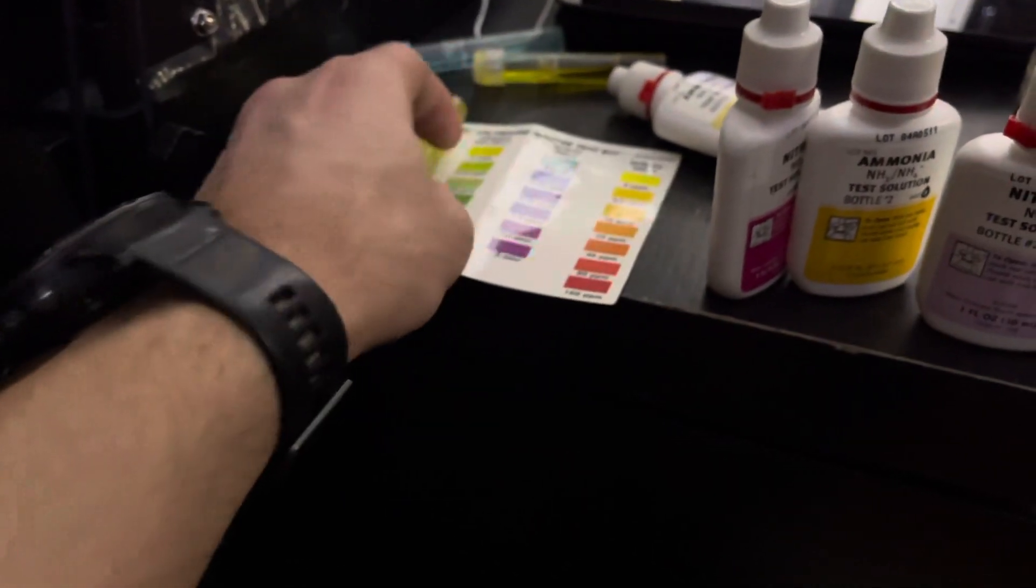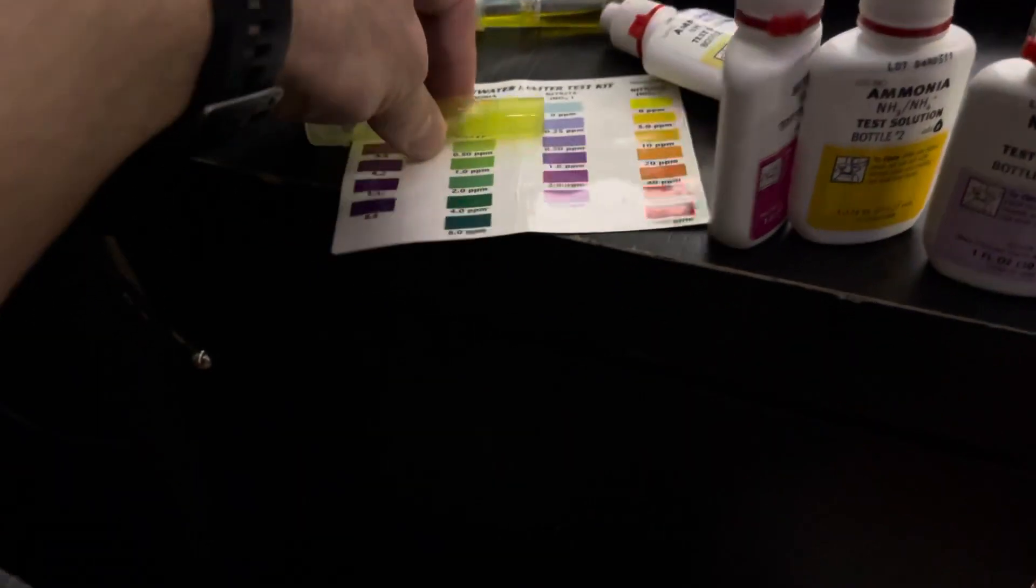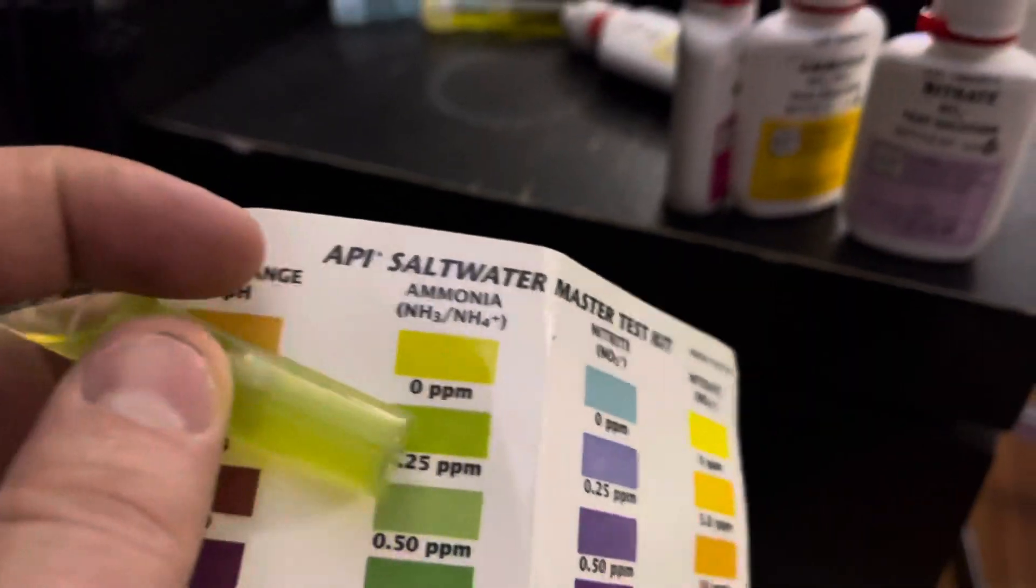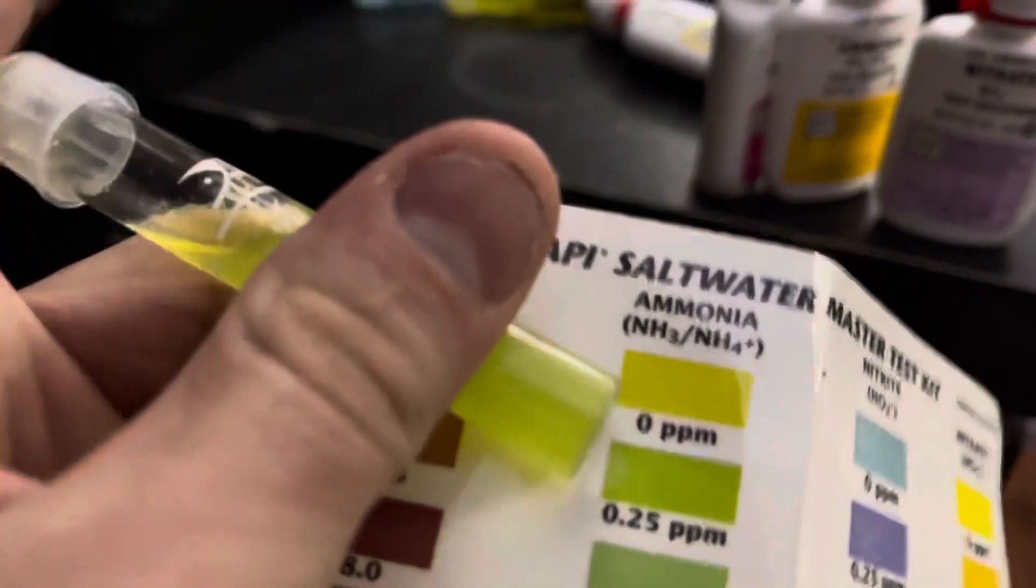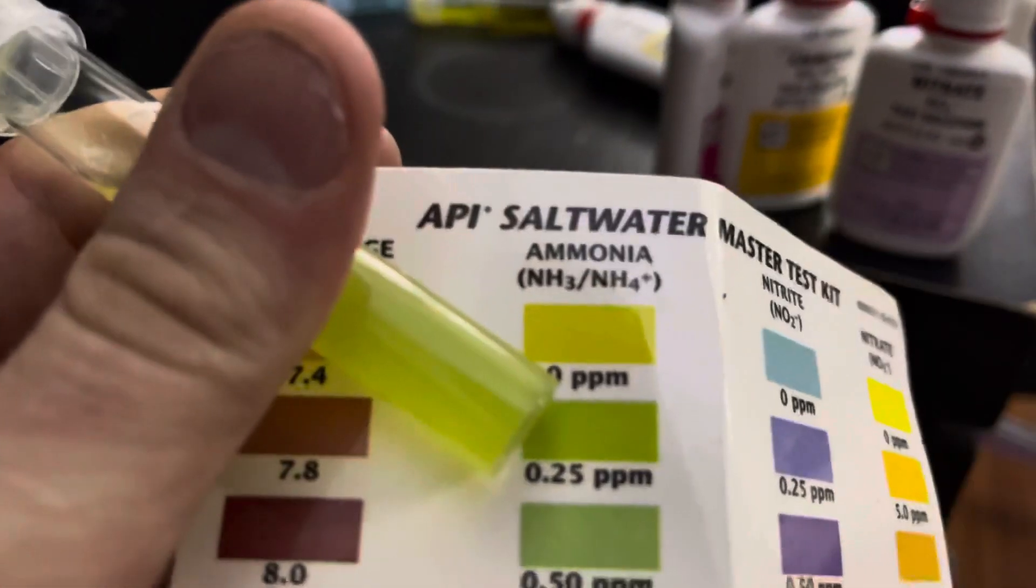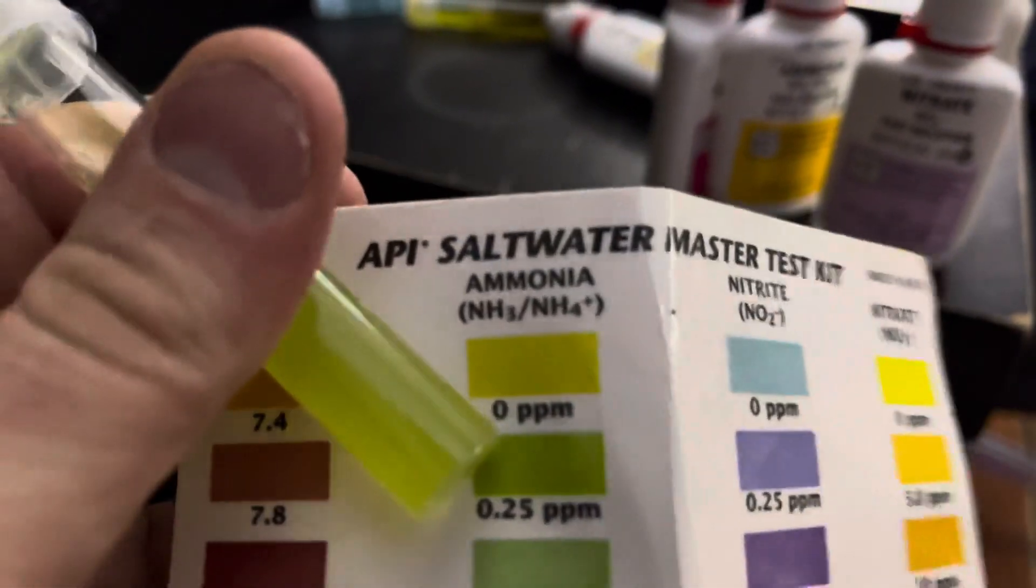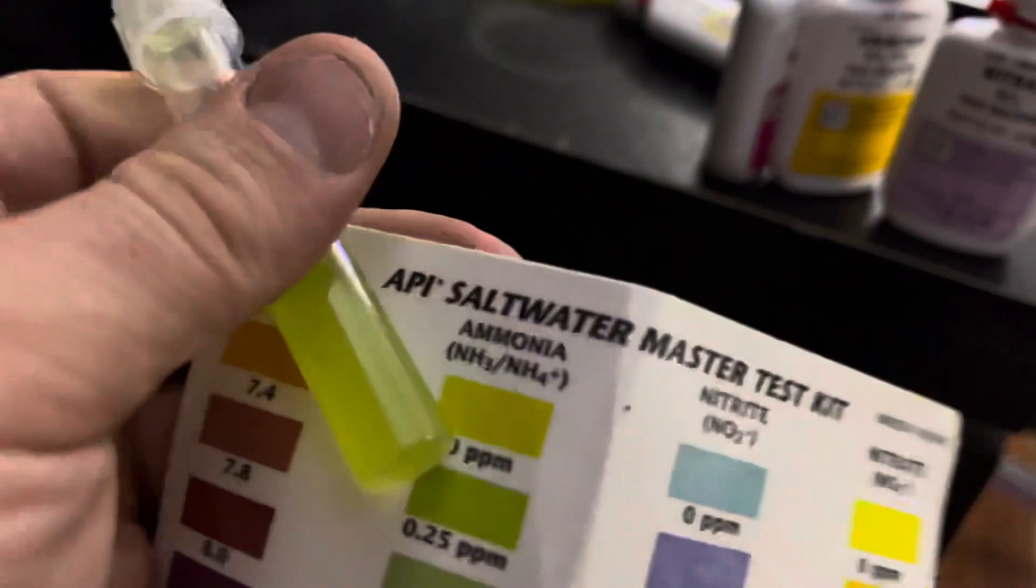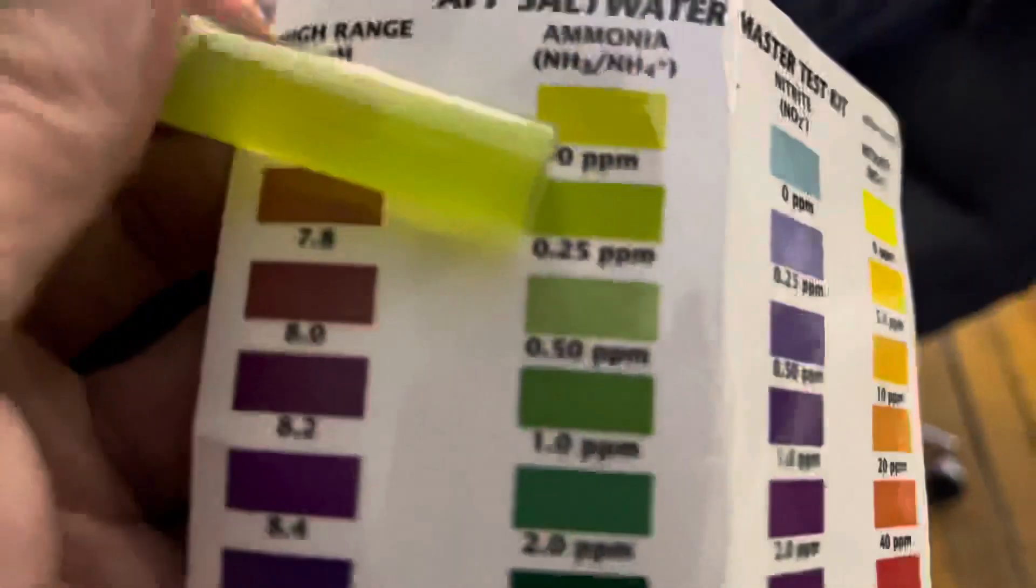The ammonia level seems to be around, trying to do this one-handed here, it seems to be somewhere in between these two here. It actually looks like it's almost done being cycled in that sense. To be honest, it's really hard to tell without the light shining in it, but it looks like it's somewhere between those two there.